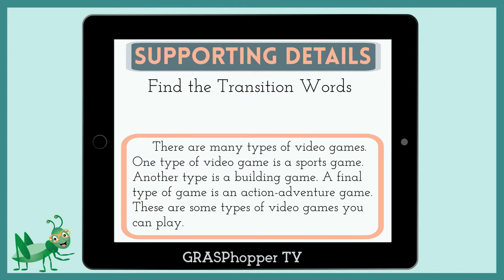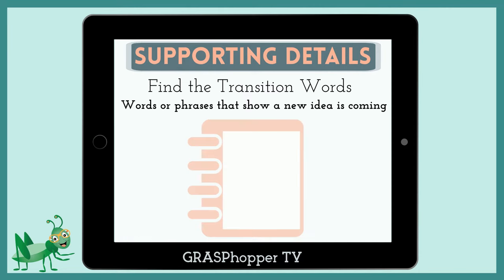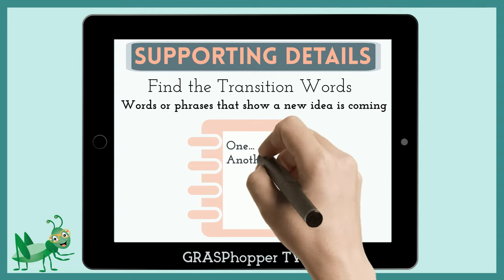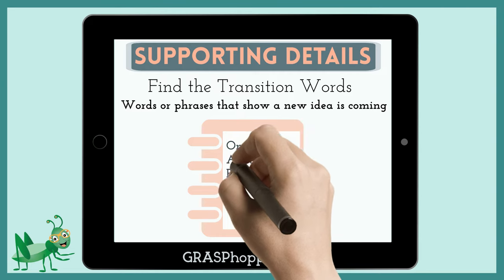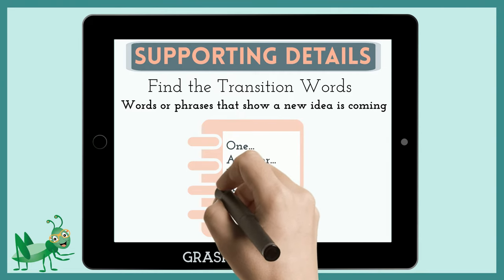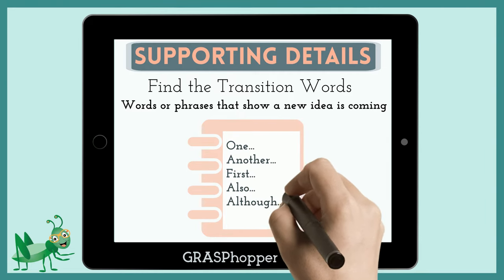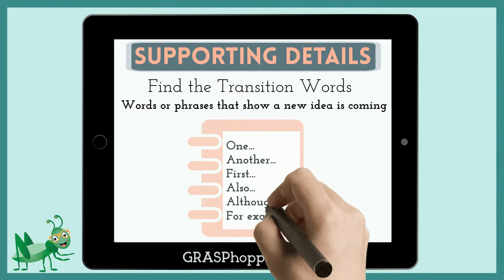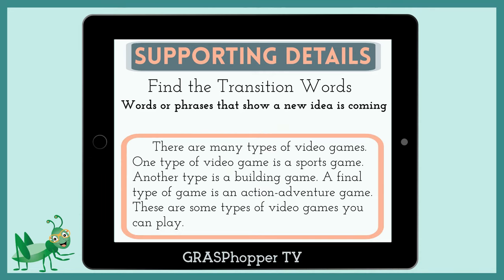After that, we find the transition words. These are words or phrases that show a new idea is coming. Some examples of transition words are: one, another, first, also, although, and for example. So let's take a look at our paragraph about video games and circle the transition words.